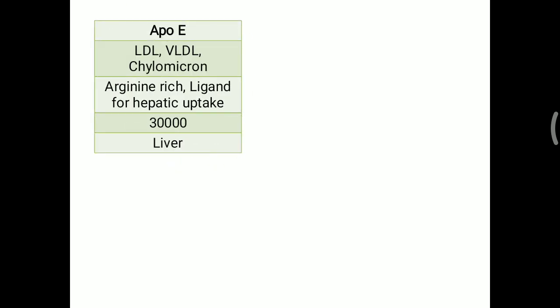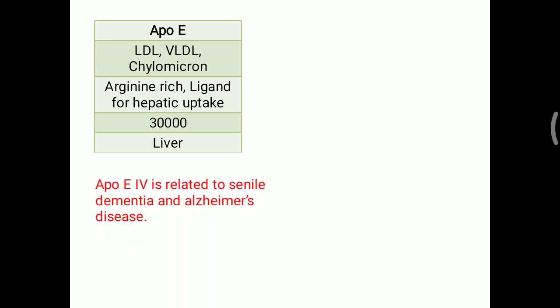Apo E is found on chylomicrons, VLDL, and LDL. It is rich in arginine amino acids and acts as a ligand for the hepatic receptor. It is produced by the liver. Apo E has four different isoforms, and Apo E4 is associated with senile dementia and Alzheimer's disease. Apo E is also associated with lipoprotein glomerulopathy.